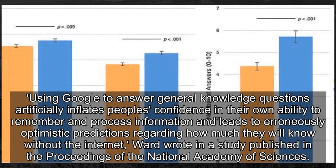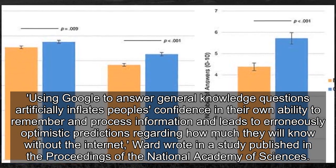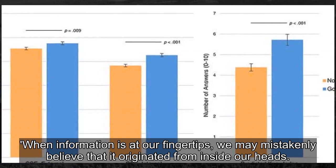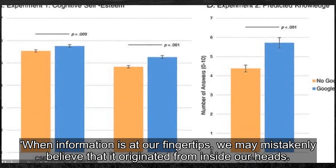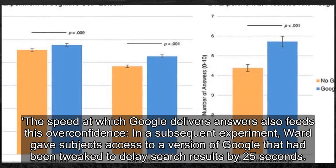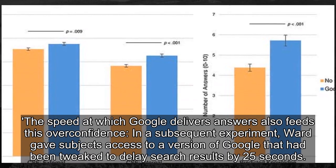Ward wrote in a study published in the Proceedings of the National Academy of Sciences that when information is at our fingertips, we may mistakenly believe that it originated from inside our heads. The speed at which Google delivers answers also feeds this overconfidence.